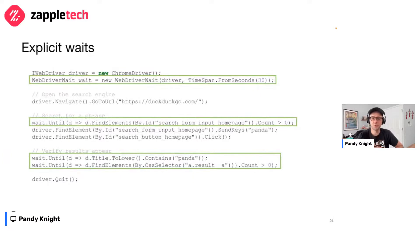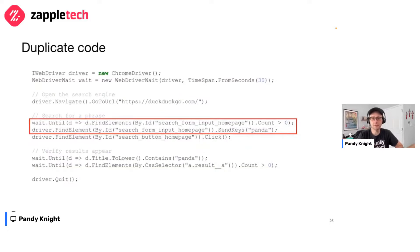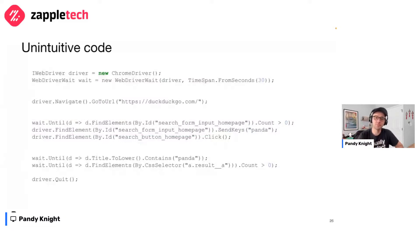You could set an implicit wait that makes calls wait until target elements appear, but they don't work for all cases, such as the title race condition. Explicit waits provide much more control over waiting timeout and conditions. They use a WebDriverWait object with a preset timeout value and must be placed explicitly throughout the code. However, raw calls with explicit waits make code less intuitive — removing the comments leaves a wall of text that is difficult to understand at a glance.